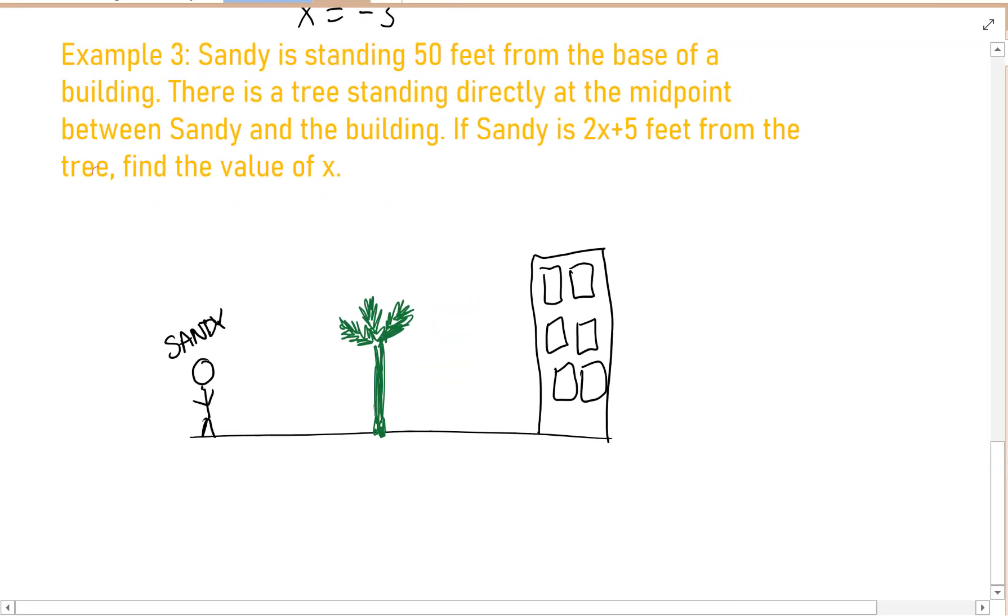So now that we have this stunning diagram, we are going to fill in any lengths that we may know. Sandy is standing 50 feet from the base of the building. So the distance between Sandy and the base of the building is 50 feet. That is good to know. There's another length that they gave us. And that was Sandy is 2X plus 5 feet from the tree. So this distance right here is 2X plus 5 feet.